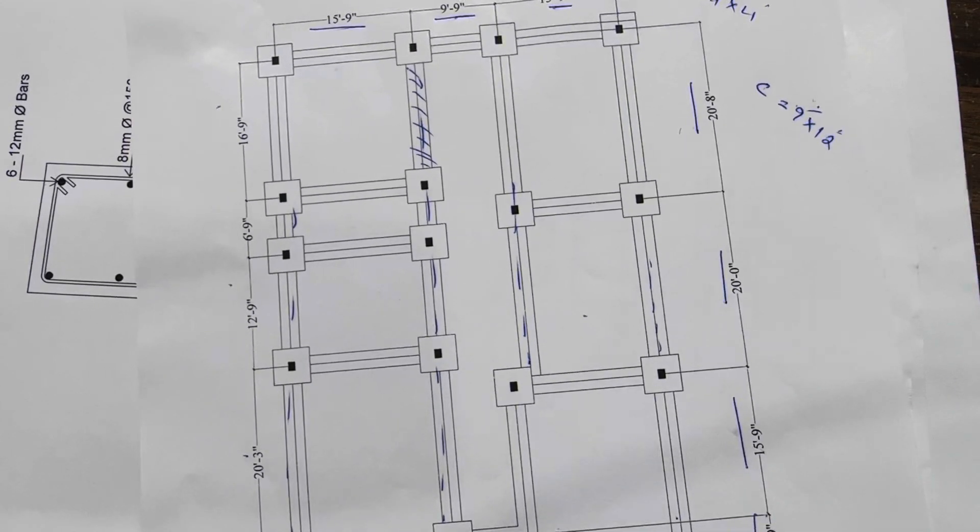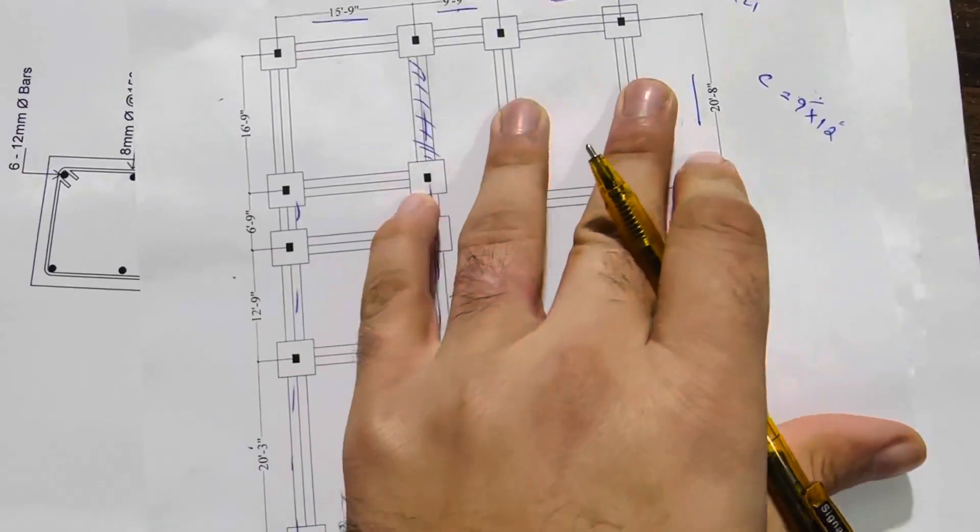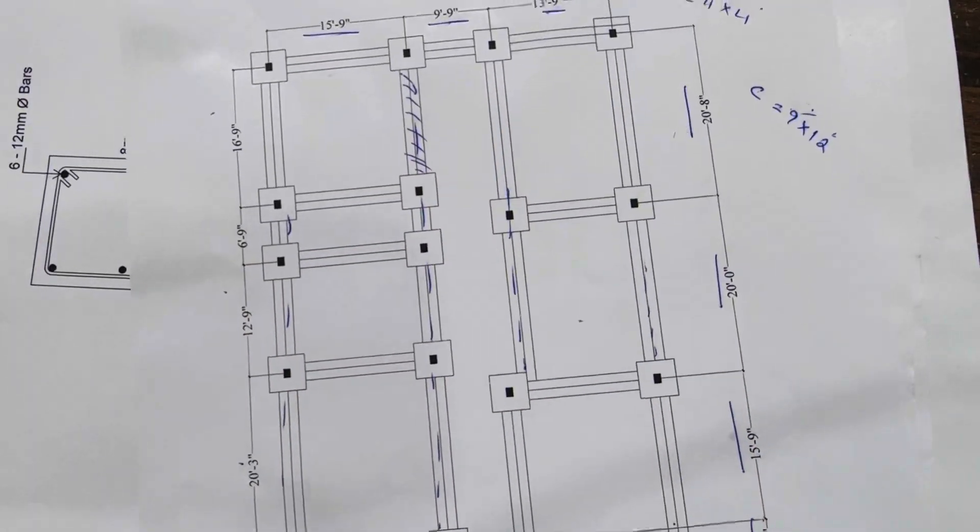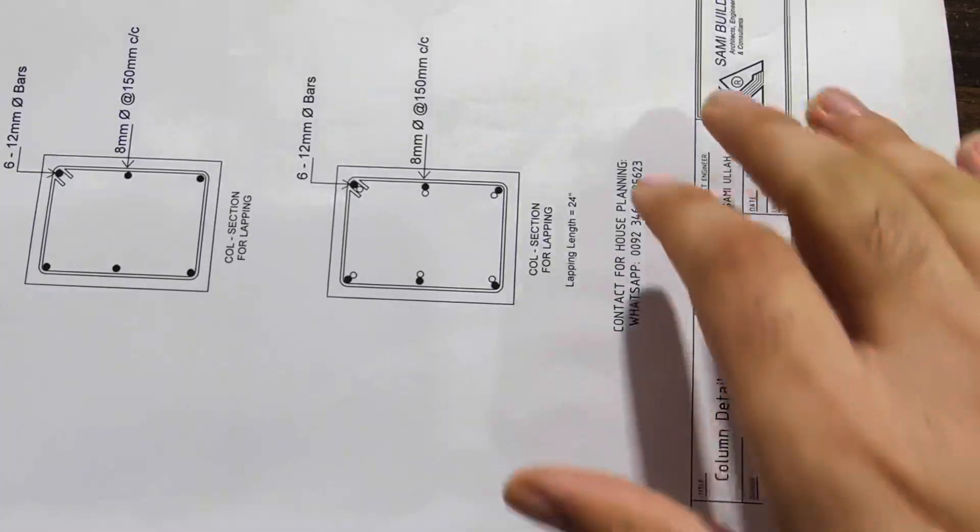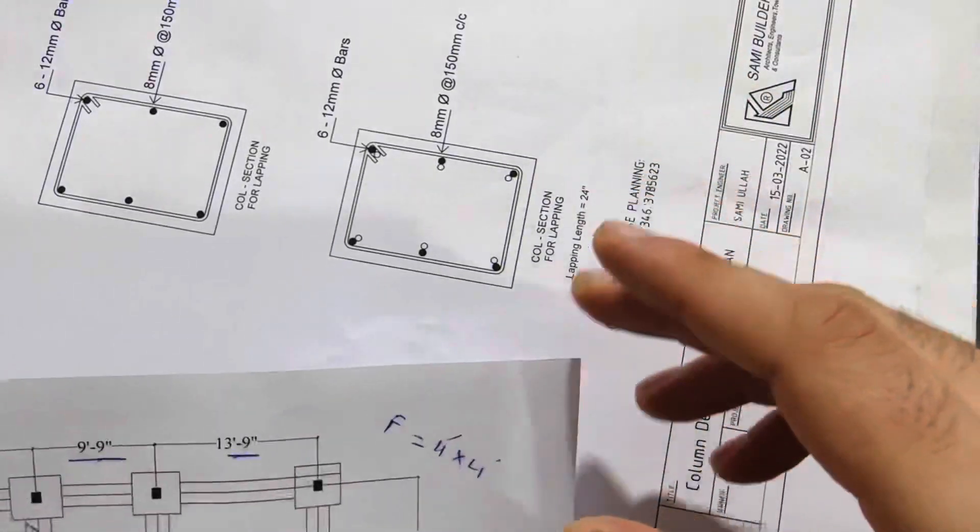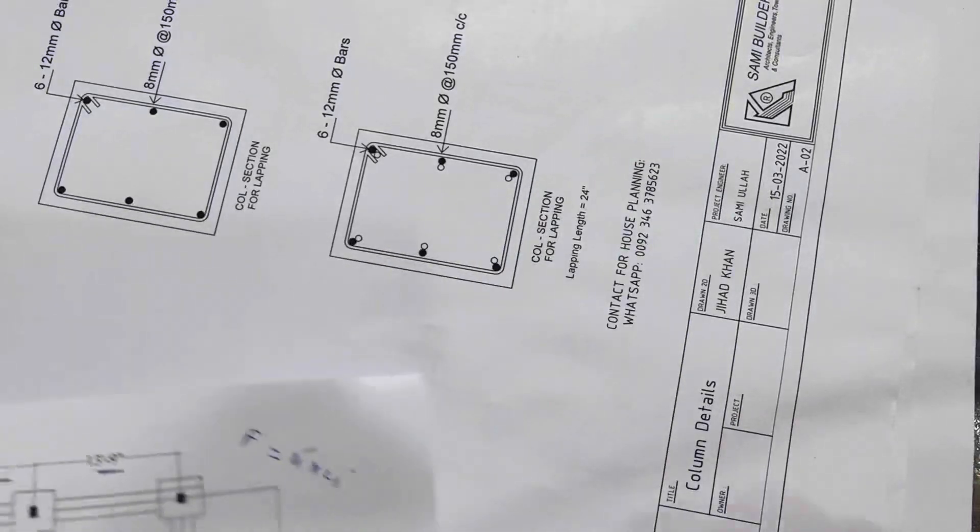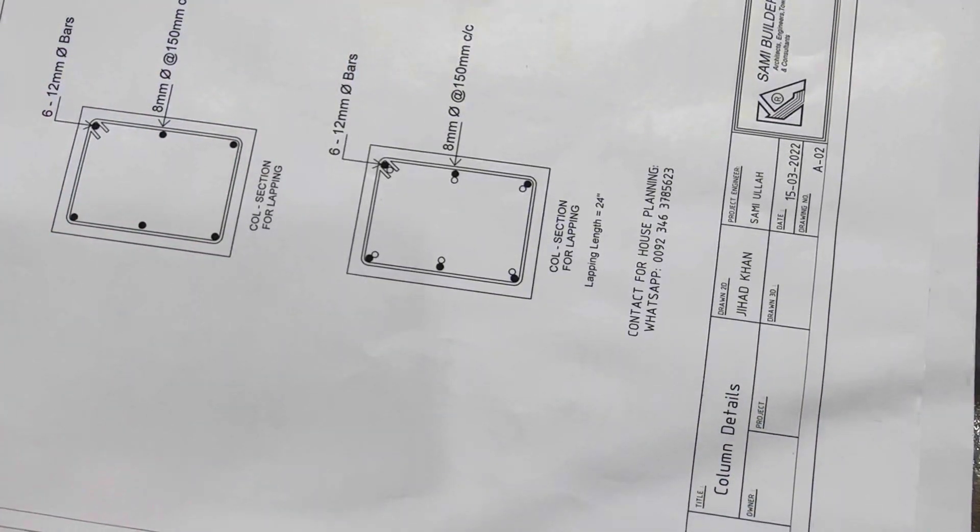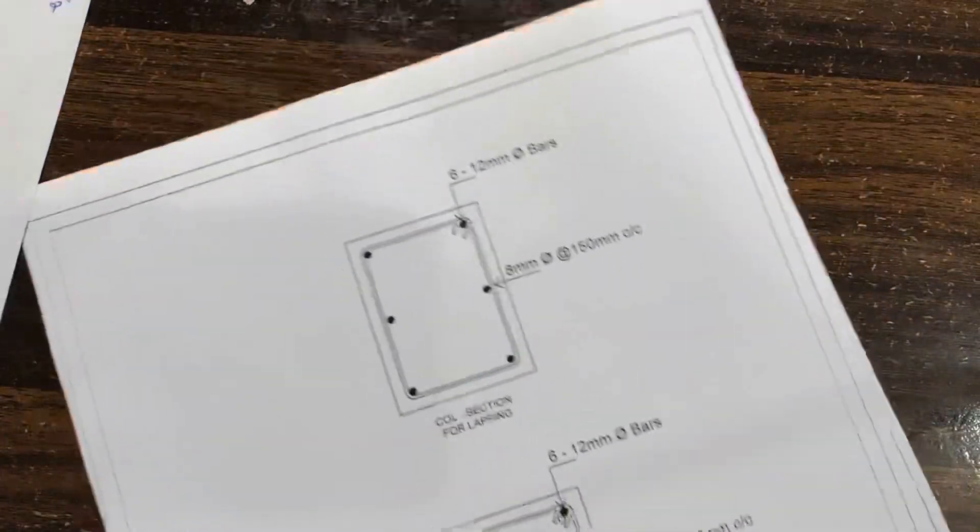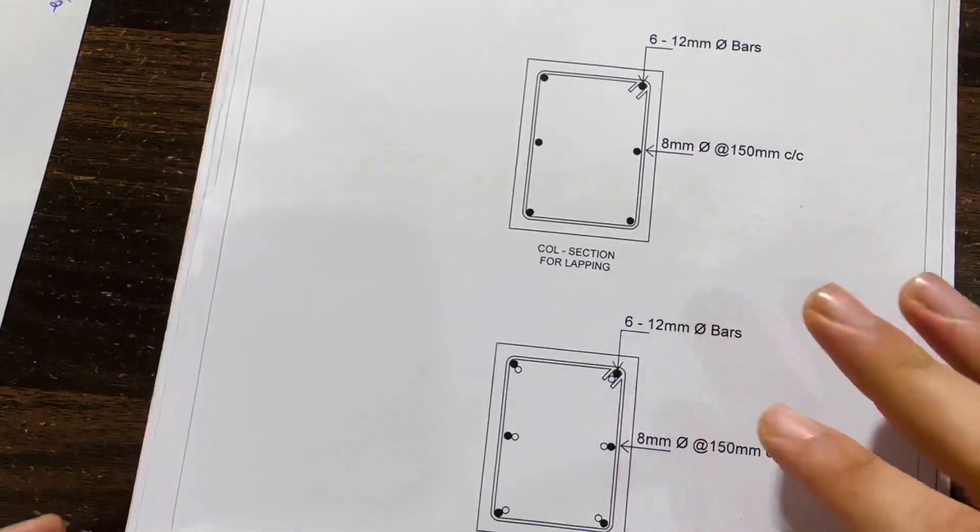This is especially for G plus one story, not for commercial building. This is for residential building. We did its calculation especially for the safe structure design G plus one story, but here we have factor of safety G plus two story, you can use it normally.